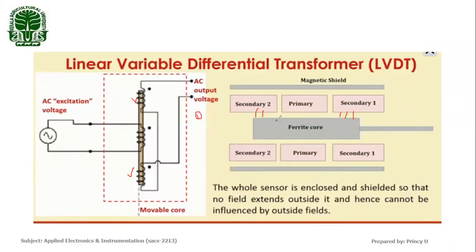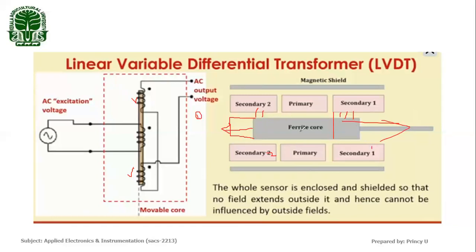When we move the ferrite core in one direction, the core reaches the region of the first secondary coil and detaches from the second. The voltage induced in the first secondary increases while the voltage induced in the second secondary decreases. So there is a difference in voltage and an output voltage is produced. When we move the core to the other side, there is no induced EMF in the second secondary coil, but there is an output voltage in the first secondary. The output is the difference of these two voltages.